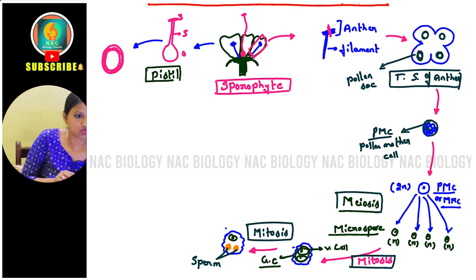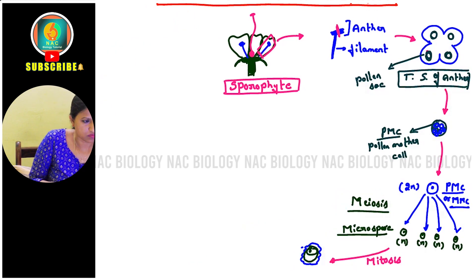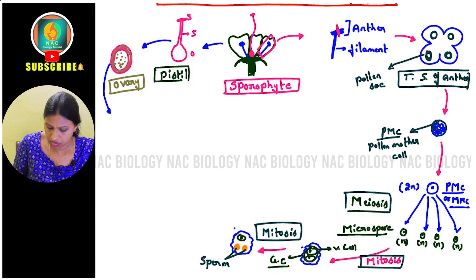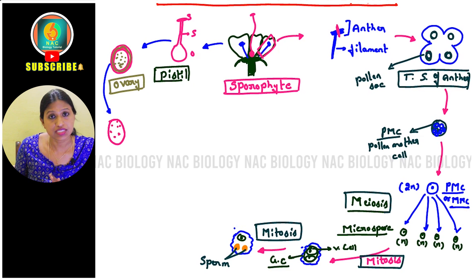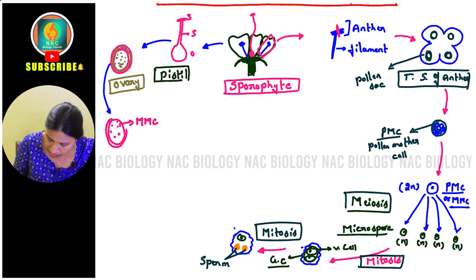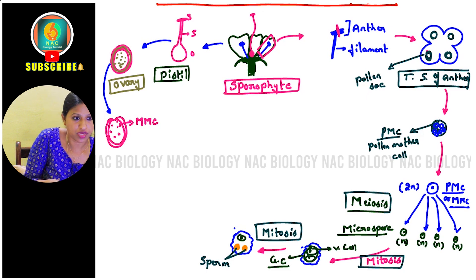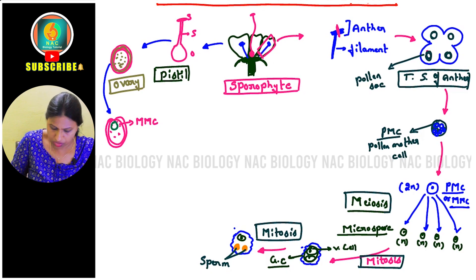The ovule is surrounded by many integuments. Inside the ovule there are many cells, and one particular cell that differs in nature is the megaspore mother cell (MMC). Just as we had the microspore mother cell on the male side, here on the female side we have the megaspore mother cell. This cell will undergo the process of meiosis because it is 2n.